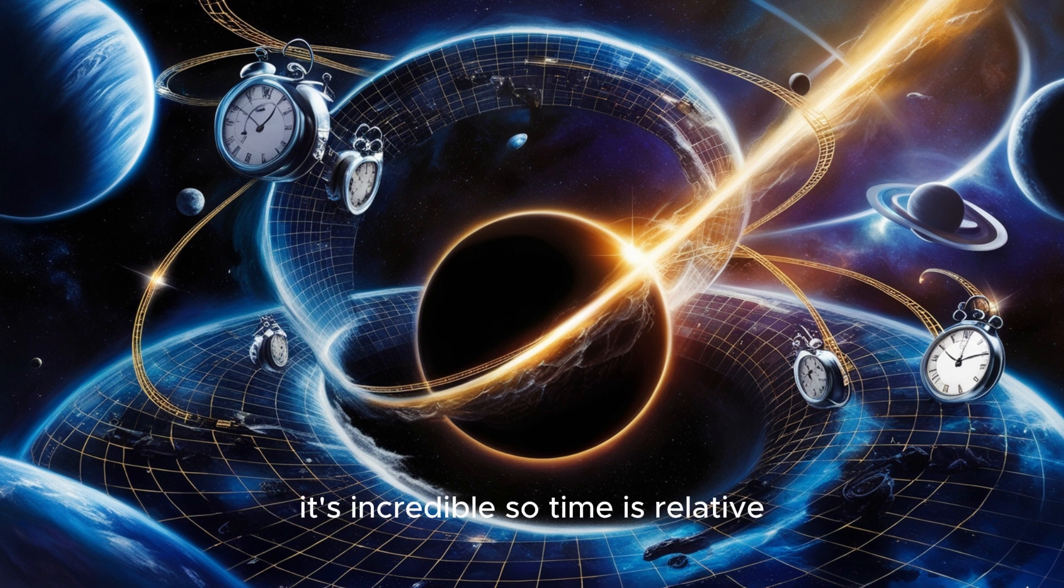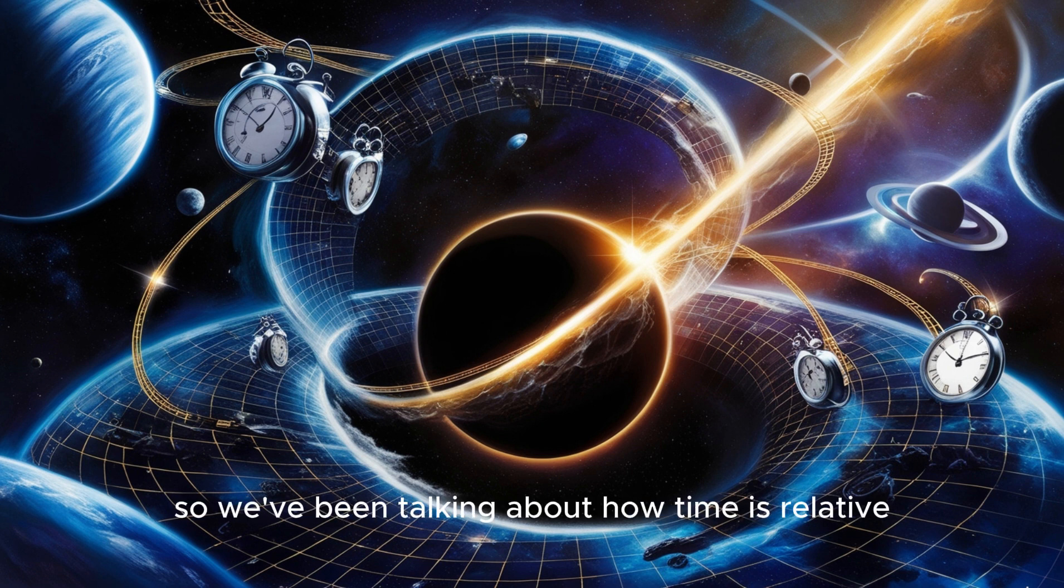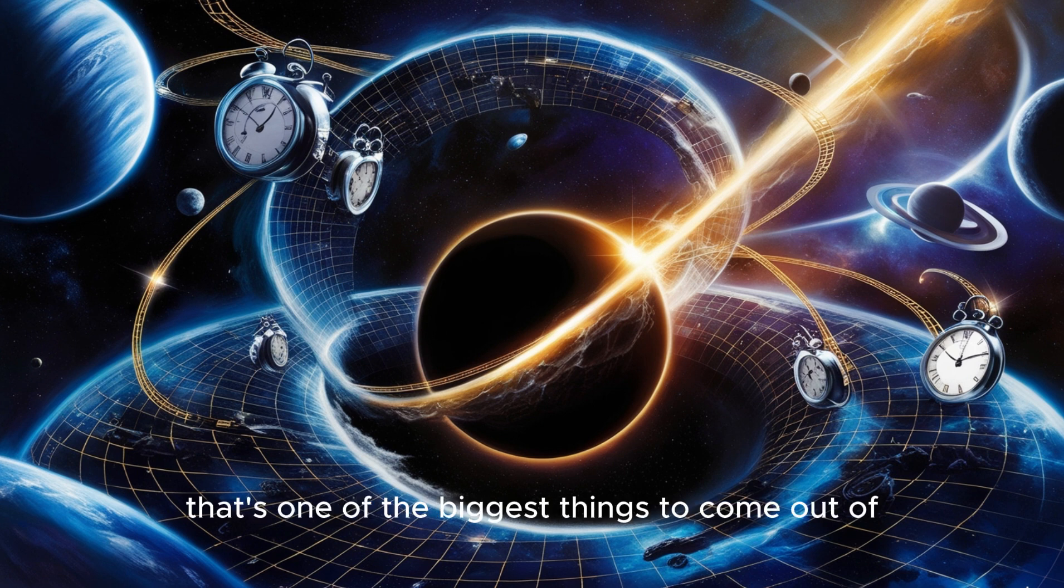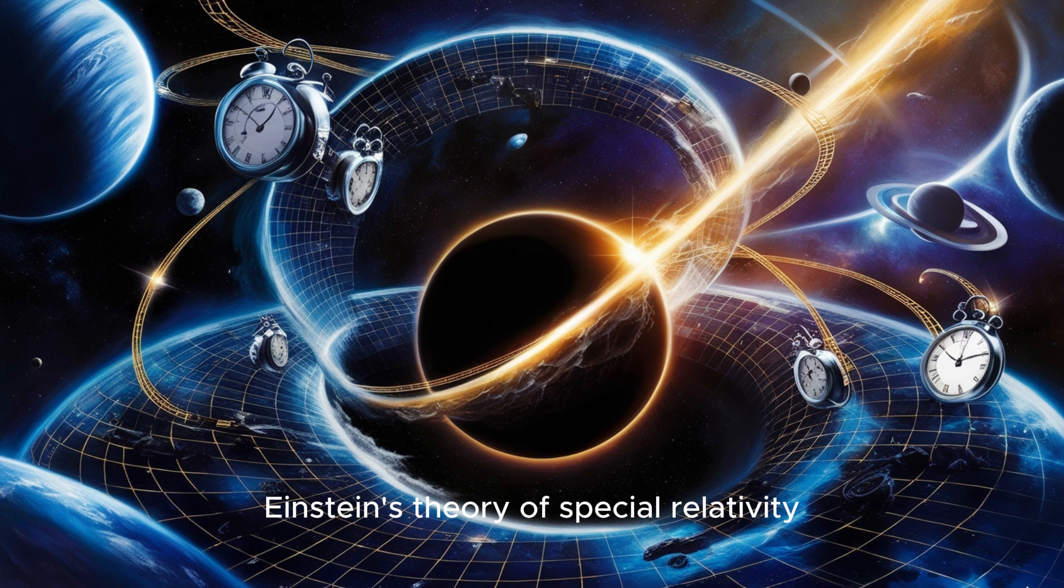And that's just one example of how Einstein's work has changed our understanding of the universe. So we've been talking about how time is relative and can be warped by gravity and speed. But the article also mentions this speed limit of the cosmos. That's one of the biggest things to come out of Einstein's theory of special relativity. The speed of light is the ultimate speed limit. Nothing can go faster than light.